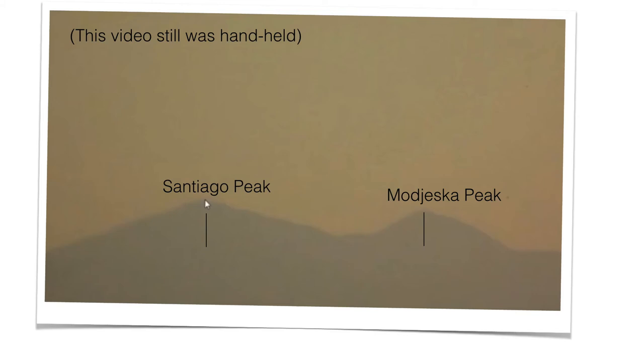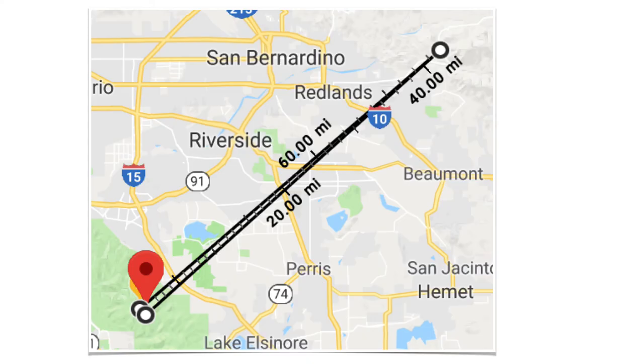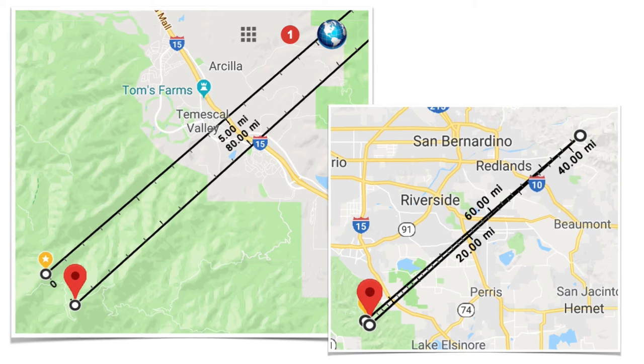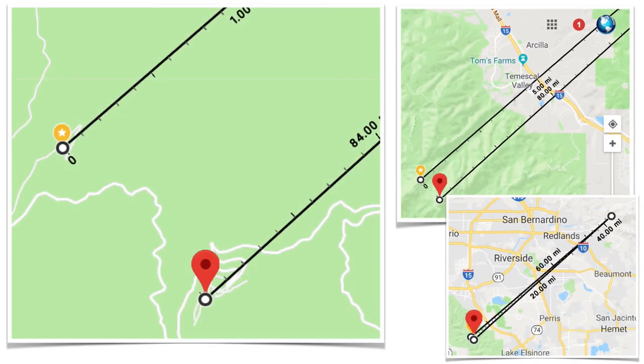Now this image isn't perfect because the video was handheld, but we can still do some pixel math. So we have Santiago peak and Modeska peak. So let's figure out where these things are on the map. In the upper right is the observer, John. That's where his camera was. And then lower left, we have the two mountains. So let's zoom into the lower left. Again, there are the two mountains and then let's zoom in further.